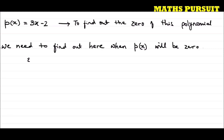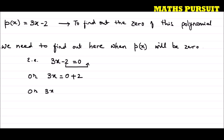That means 3x minus 2 is equal to zero. Or I can write 3x is equal to zero plus 2 — I just moved this minus 2 from the left hand side to the right hand side. So 3x is equal to 2, or x is equal to 2 upon 3.